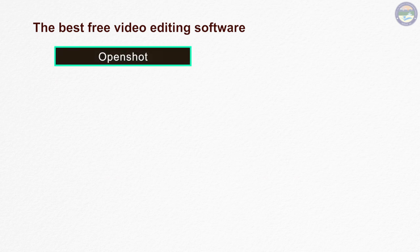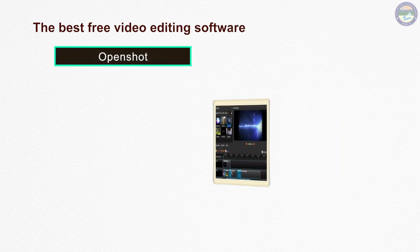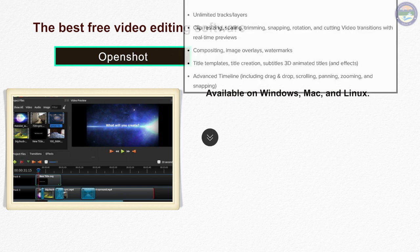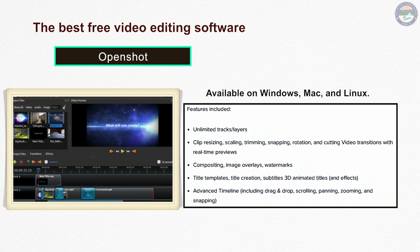OpenShot Video Editor एक बेहतरीन free video editing software है। इसे आप Linux, Mac और Windows सभी platforms के लिए use कर सकते हैं। इस software में वो सभी tools और features मिल जाते हैं जो एक paid video editing software में मिलते हैं। इससे आप audio edit, animation add, video effects, background change, text edit, और video trim कर सकते हैं।